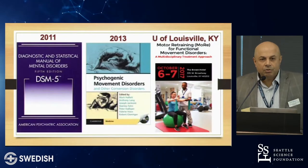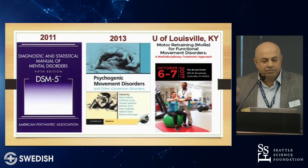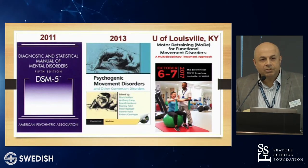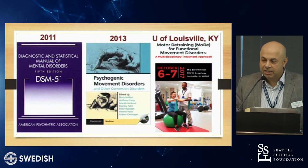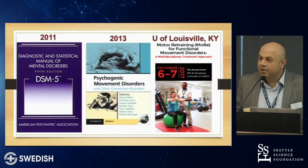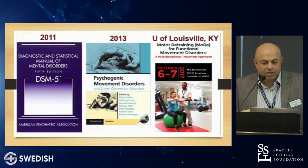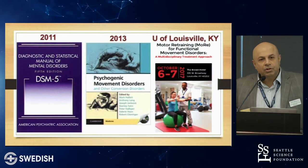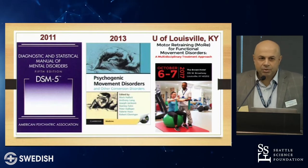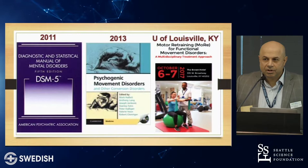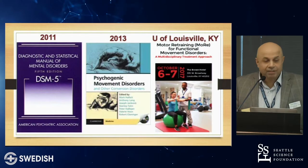My references include the Diagnostic Statistics Manual 5 from 2011, the textbook Psychogenic Movement Disorders, and the course I attended at the University of Louisville in Kentucky in 2017. You'll notice that I use the term functional movement disorders and not psychogenic, although the textbook says psychogenic movement disorders, because we've transitioned to using functional, a term popularized in 2014, after the textbook came out.